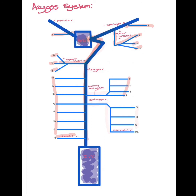Intercostal veins 5 through 8 drain directly into the accessory hemiazygous vein, to the azygous vein, and into the SVC. Intercostal veins 9 through 11 and the subcostal vein drain into the hemiazygous vein, into the azygous vein, and into the SVC.